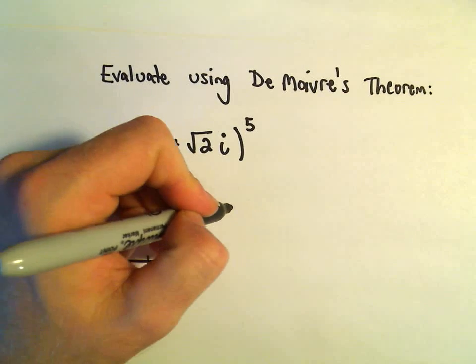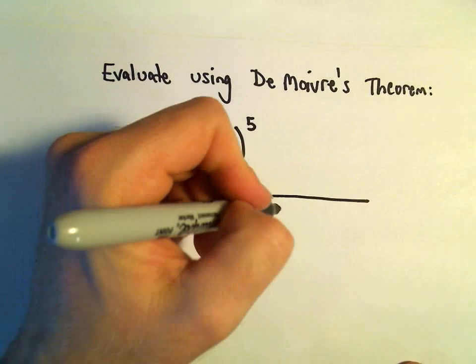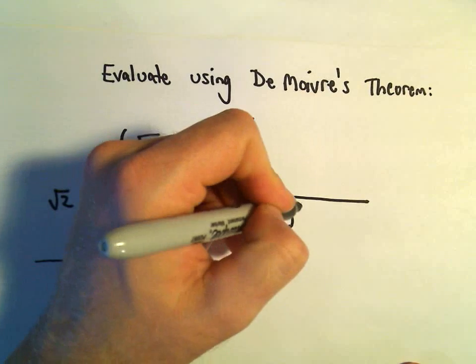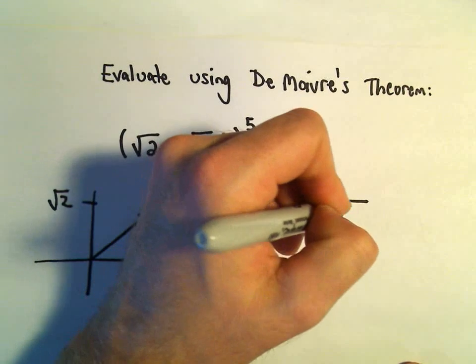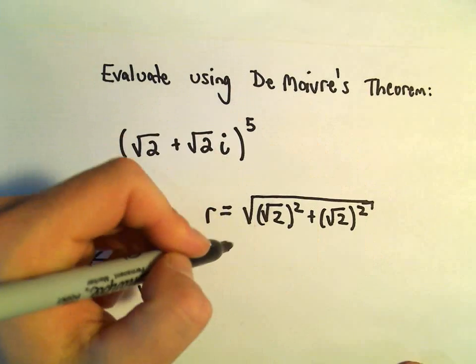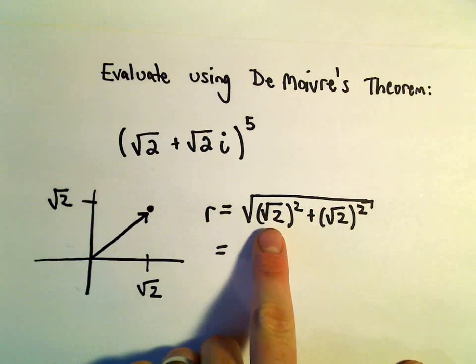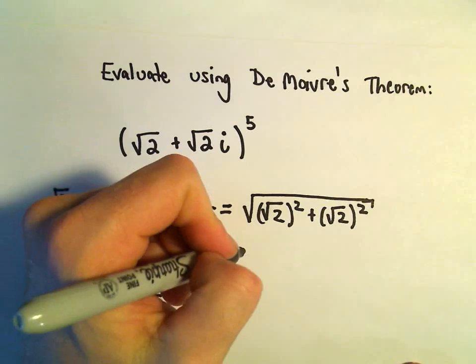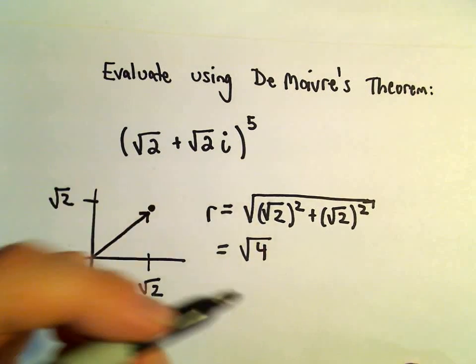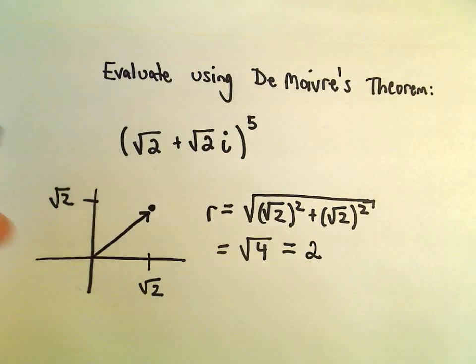Let's see, so we've got to figure out our value for r. So we take the real part and we square it, we take the imaginary part and we square it, and then we add those together. So let's see, this will be 2 + 2, which will be 4. And the square root of 4, that's simply going to give us 2.